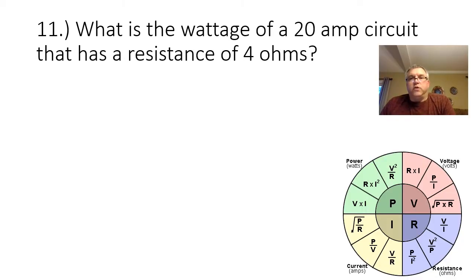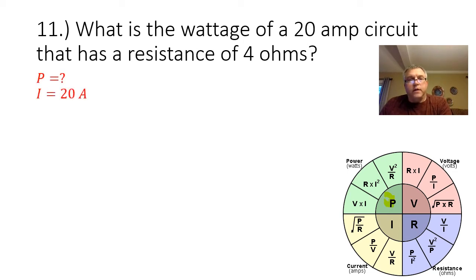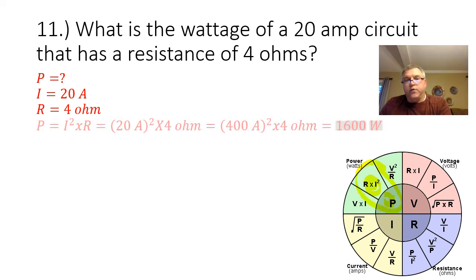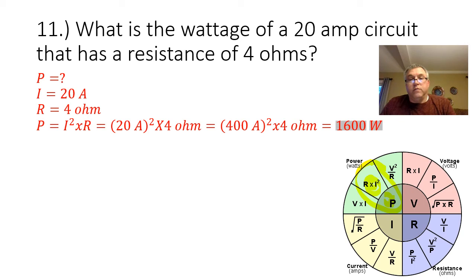Number 11: what is the wattage of a 20-amp circuit that has a resistance of 4 ohms? We are being asked to find the power. We are given the current at 20 amps and the resistance at 4 ohms. Our equation is P equals I squared times R. 20 amps squared times 4 ohms gives me a power of 1,600 watts.